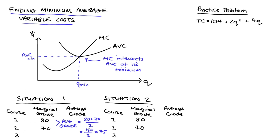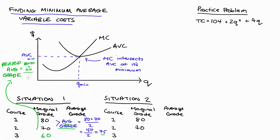Now let's imagine you took a third course and you got 60 for this course. You didn't do as well, but you still passed. What I'm going to think about is what happens to your average grade once you add that third course into the mix. Because this marginal grade was lower than the average, this marginal grade is going to pull that average down. The revised average is 80 plus 70 plus 60 divided by three, which equals 210 over three — equal to 70. So our average went from 75 down to 70.